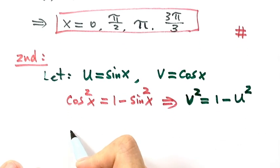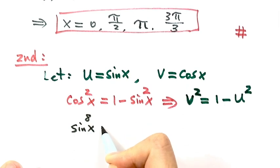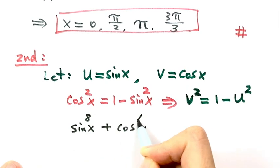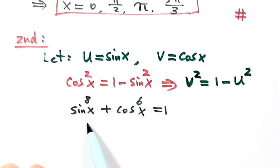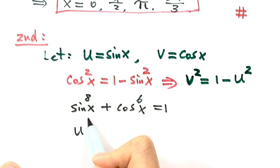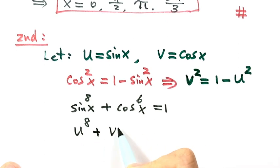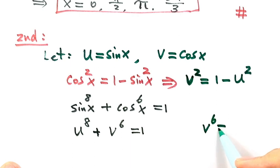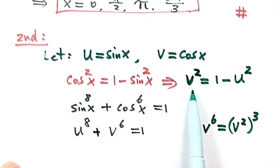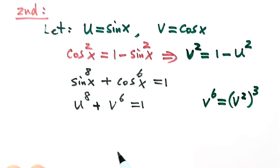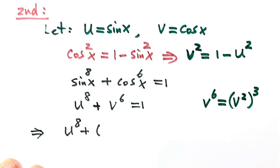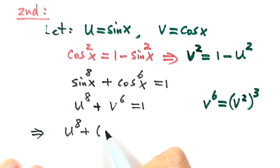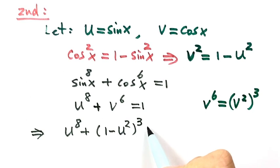Starting with the given equation sine x to the power of 8 plus cosine x to the power of 6 equals 1, we substitute to get u to the 8th plus v to the 6th equals 1. Since v to the power of 6 equals (v²)³, we replace v² with (1 minus u²). This gives u to the power of 8 plus (1 minus u²) to the 3rd equals 1.